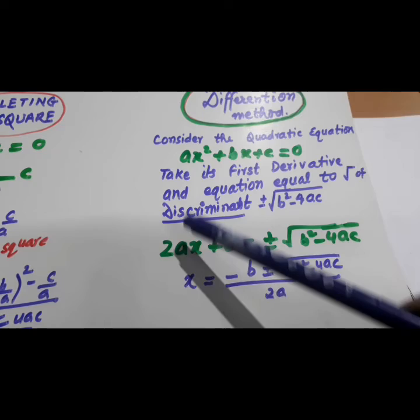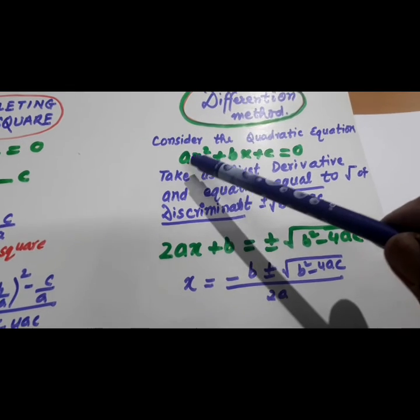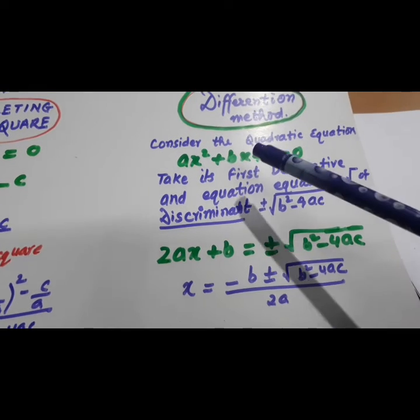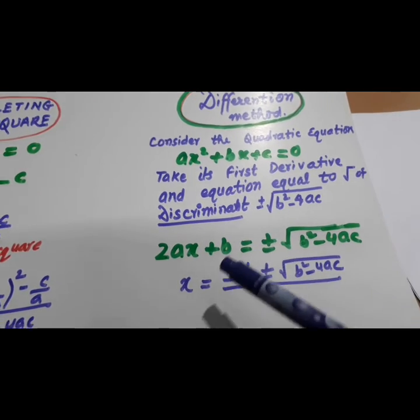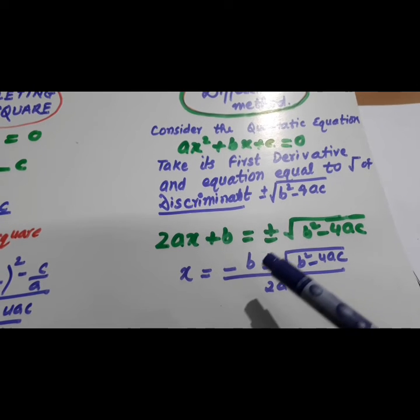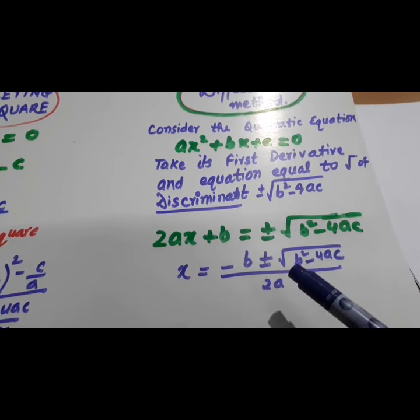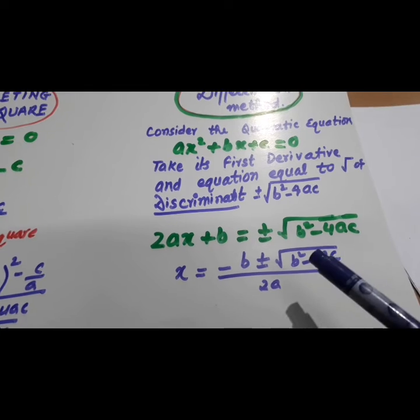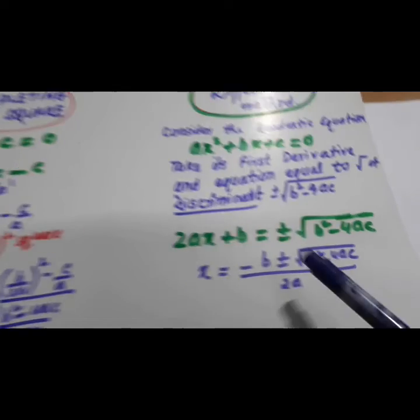Derivative of x square. Derivative of Ax square is 2Ax. Derivative of Bx is B. And from here we find the value of x. And that is minus B plus minus under root B square minus 4AC over 2A.